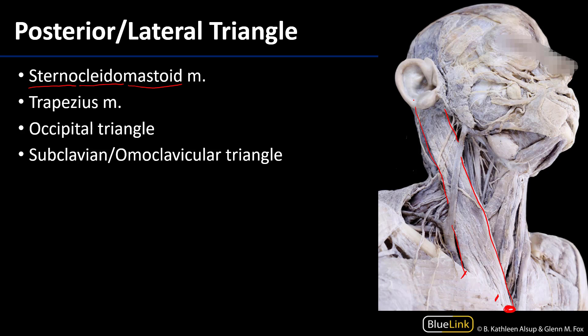The next muscle to discuss is the trapezius muscle, which is trapezoidal in shape — hence its name. It has several superior attachments: the superior nuchal line, much like the SCM; the external occipital protuberance of the occipital bone; the ligamentum nuchae, or ligament of the neck; as well as the spinous processes of C7 through T12. These all come together with an inferior attachment to both the clavicle and the spine of the scapula.